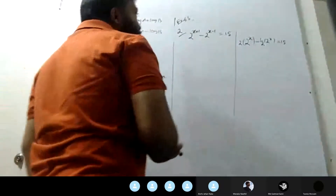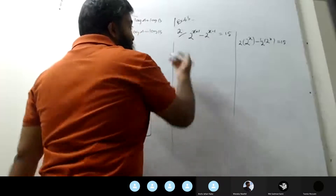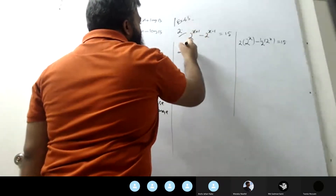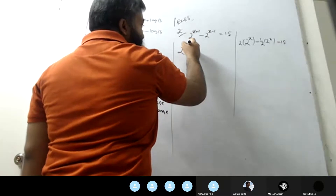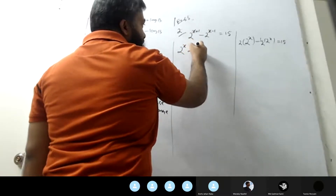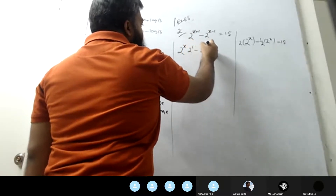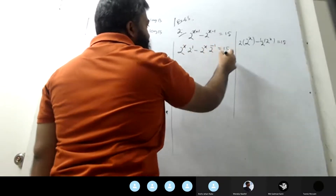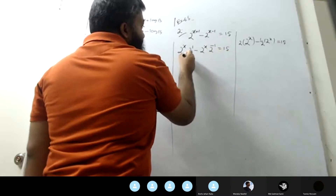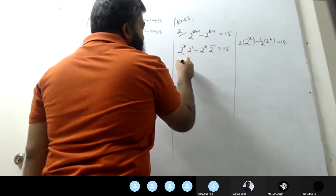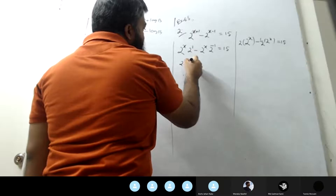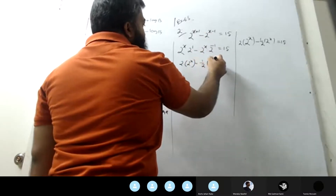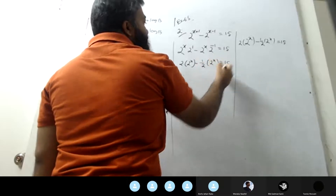Take the value: 2 to the power x times 2 to the power 1, minus 2 to the power x times 2 to the power minus 1, equals 15. That means 2 into 2 to the power x, minus 2 to the power minus 1, equals 15.